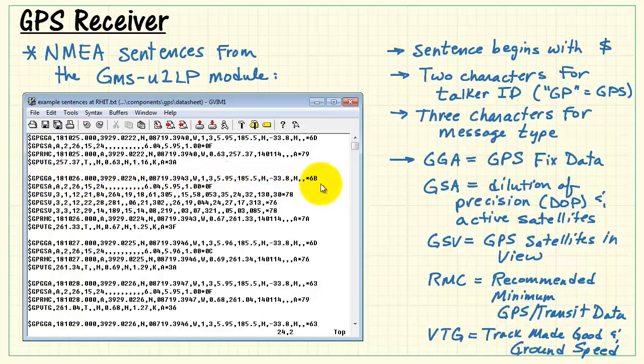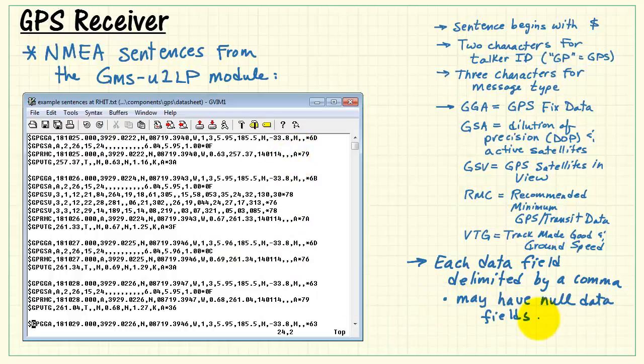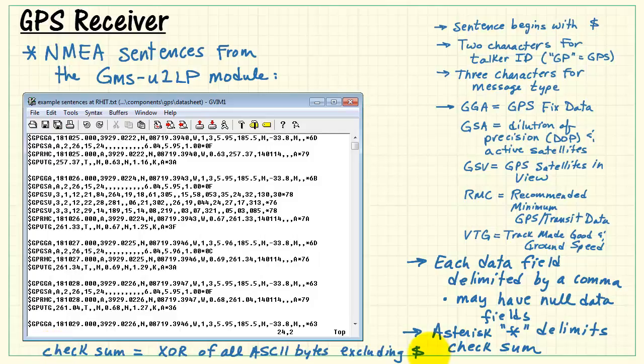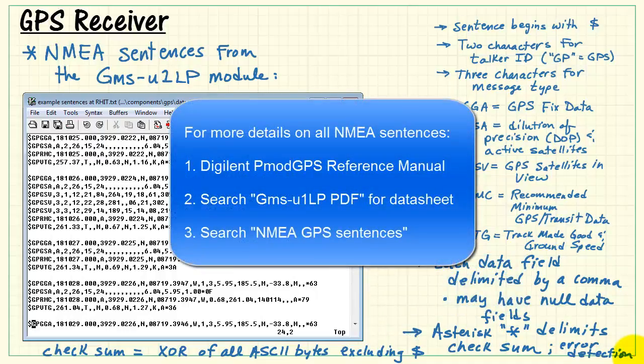As you look at the remainder of the sentence, you see fields separated by commas. Each data field is delimited by a comma. In this case, sometimes we see strings with numbers, sometimes with letters. Occasionally you see nothing between the commas, and it is possible to have null data fields. The asterisk is the last special delimiter, and that indicates that the following two characters are the checksum at the end of the sentence. The checksum is the exclusive OR of all the ASCII bytes in the sentence, excluding the dollar sign. And this is used for error detection, just to make sure that the sentence you received is good. Each sentence ends with a carriage return character, and then a line feed character. Please consult these references to get more details on all NMEA sentences.